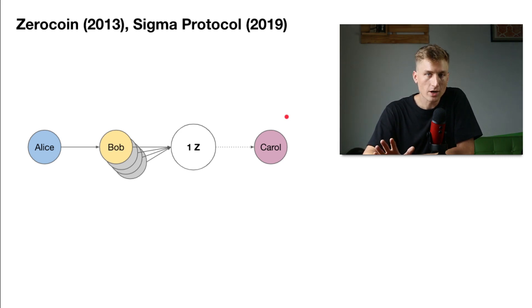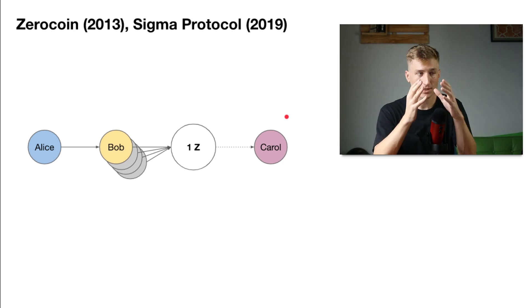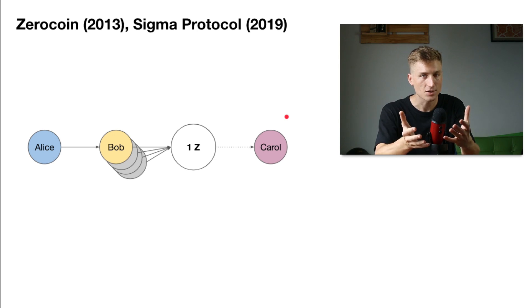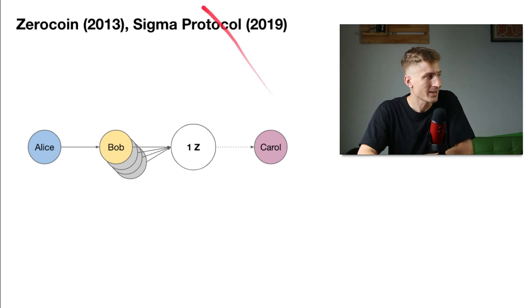So this is how Monero works in terms of anonymity, and we see what the limitations of this are. The zero coin protocol, which was first described in 2013, increased the anonymity set from the size of the ring signature to all of the private transactions of some denomination.